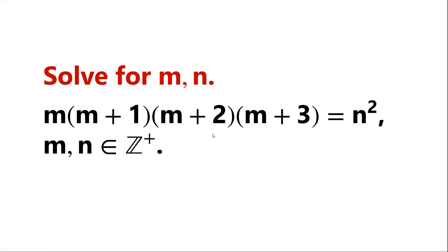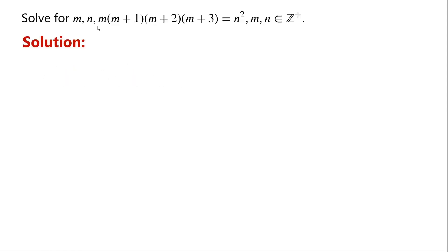Solve this equation for n, a positive integer. On the left-hand side of the equation, we have the product of four consecutive numbers. On the right-hand side of the equation, we have a perfect square. If we can write the left-hand side of the equation as a perfect square, then the equation can be solved more easily.